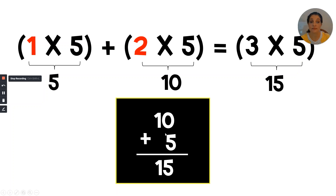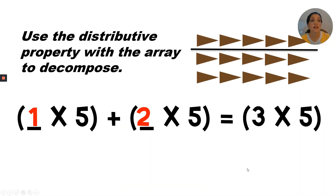Now I set it up just like this: one row of five plus two rows of five equals three rows of five. In other words, five plus ten equals 15, and ten plus five equals 15. Let's go back. We're going to count the diamonds or the triangles: 1, 2, 3, 4, 5, 6, 7, 8, 9, 10, 11, 12, 13, 14, 15. So it's true — three times five does equal 15.